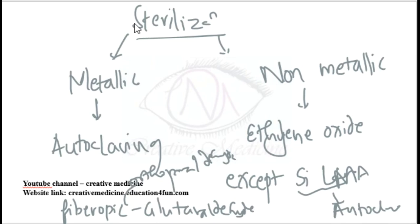Sterilization mainly depends on whether devices are metallic or non-metallic. Metallic devices are sterilized using autoclave, whereas non-metallic devices are sterilized using ethylene oxide, except for one non-metallic device: the silicon laryngeal mask airway, which is sterilized by autoclave.